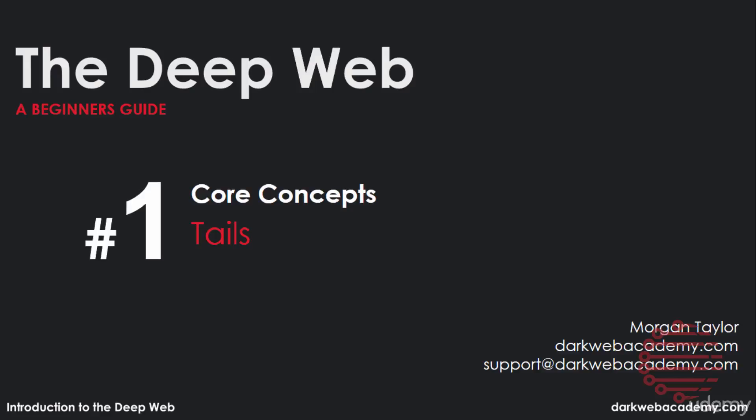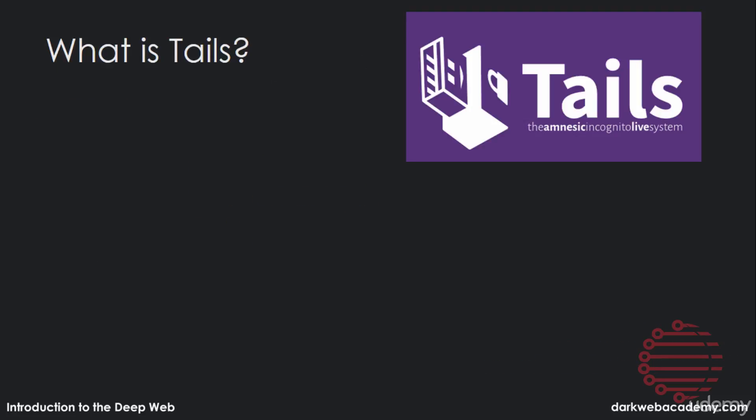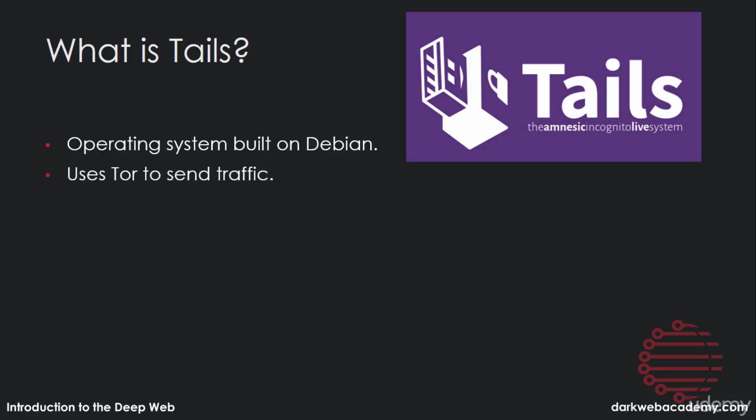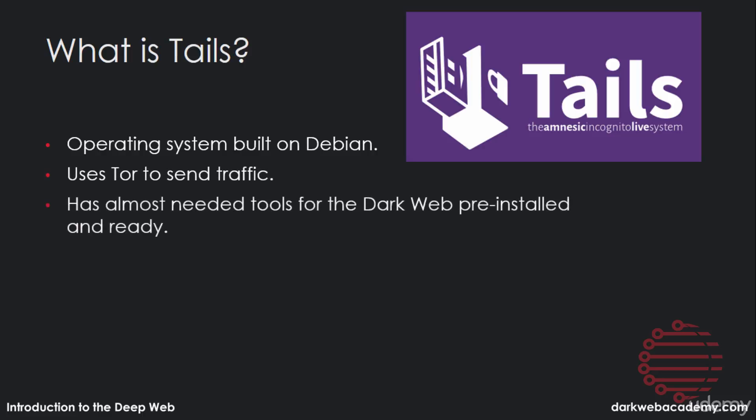One thing we haven't discussed yet is Tails. Tails is something you'll hear a lot about when talking about the dark web, and it's important to know exactly what Tails is. Tails is an operating system built on Linux. It uses only Tor to send its internet traffic, and it has almost all the tools you'll need for dark web use pre-installed and ready.